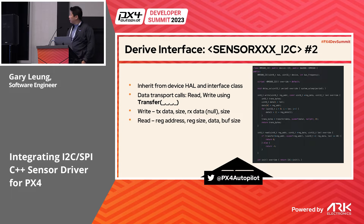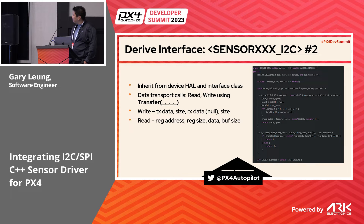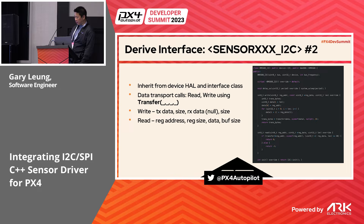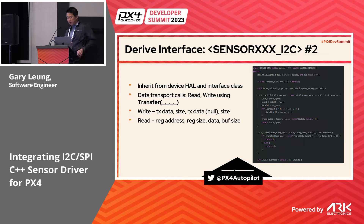Here I inherit the I2C peripheral class with the device interface I defined earlier, then implement the transport call. For I2C, the TX would be writing the first byte as the register address, followed by the data, and the receive fields would be null with a size of zero. For receive, I provide the device address, the size, the buffer for reading, and so on.